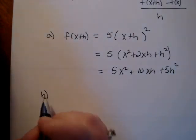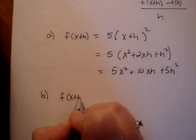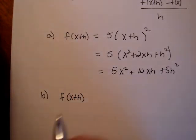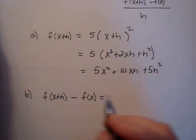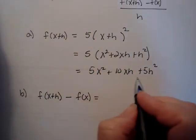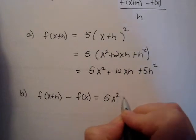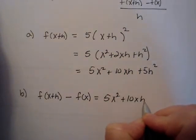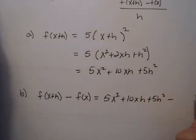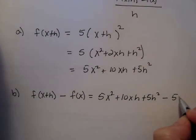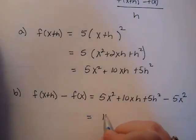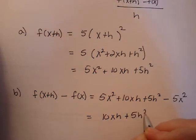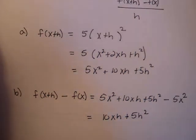Part B is, now take your answer from part A, which was f of x plus h minus the original function f of x. So that would be for our problem, our answer from part A is 5x squared plus 10xh plus 5h squared minus the original function was 5x squared. And when I simplify that, I get 10xh plus 5h squared. Let's leave it at that.